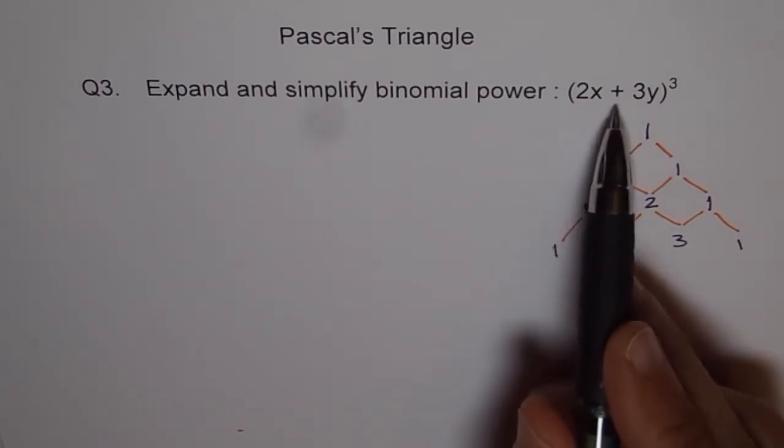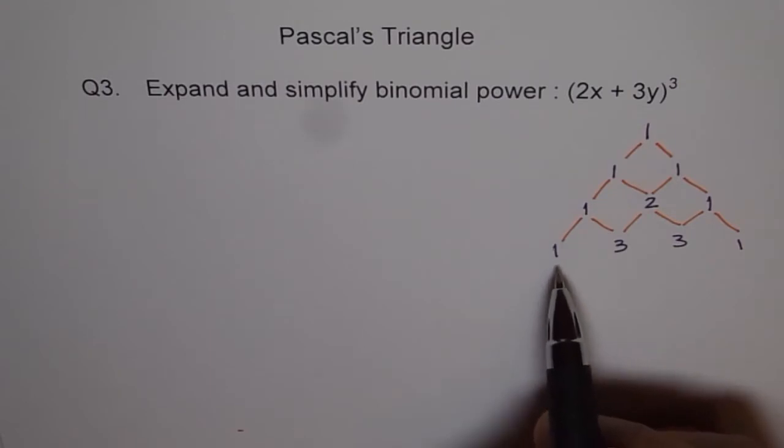It tells us that (2x + 3y)³ is going to have 4 terms: 1, 2, 3, 4 terms.